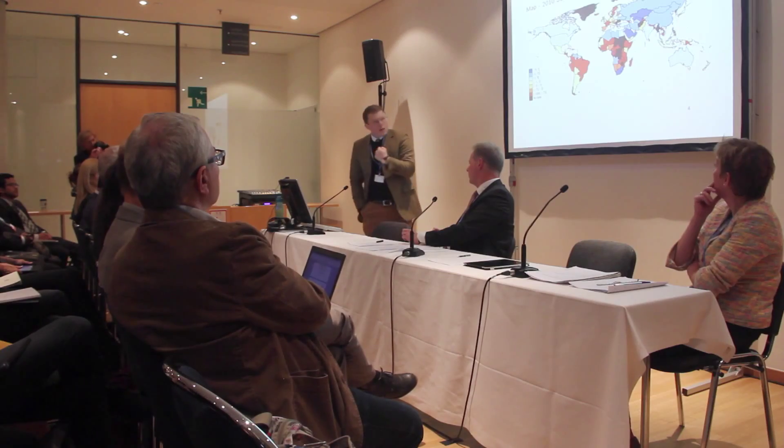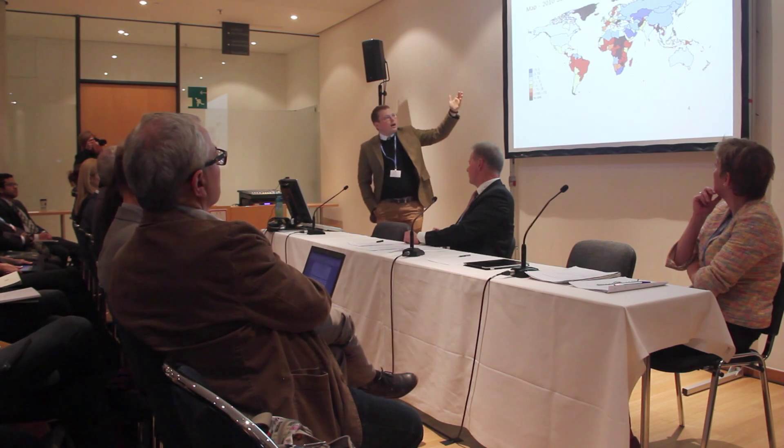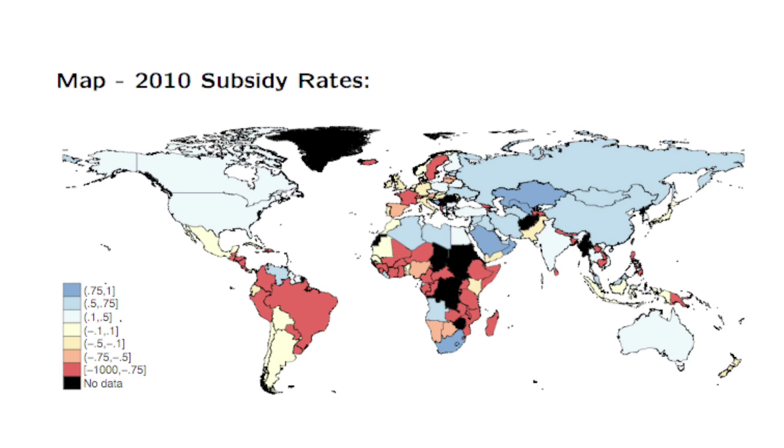The price gap approach — the idea that you take a price of petrol at the pump and compare it to some international benchmark — has been the gold standard in inferring or understanding fossil fuel subsidies. But many subsidies are indirect and don't show up in the prices of petrol at the pump. For example, countries with lots of localised oil give support or loans to drillers to purchase equipment and drill at particular sites — those loans would not be picked up by the price gap approach.